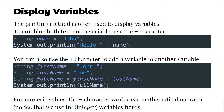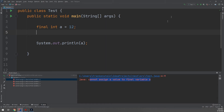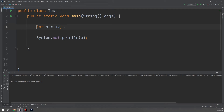Now, displaying variables: the println method is often used to display variables. To combine both text and a variable, use the plus character. For example, I have created a string variable called 'name' and assigned it the value 'John'. When printing it, we use the variable name. If you want a constant keyword before the variable, you can use it in this way.